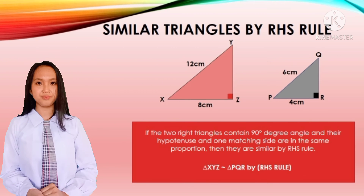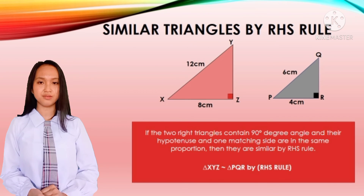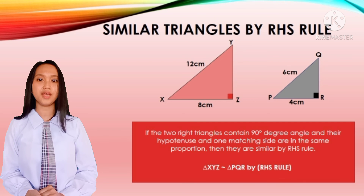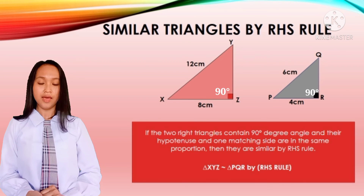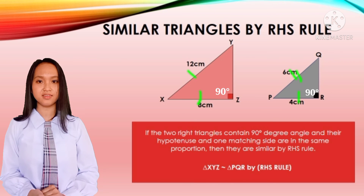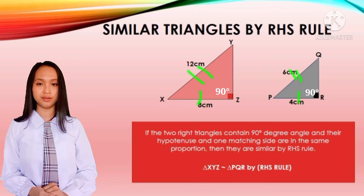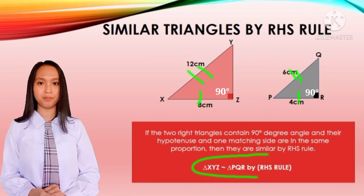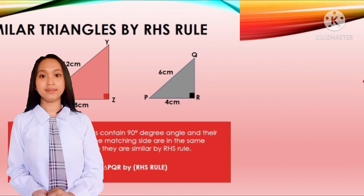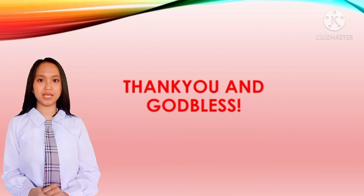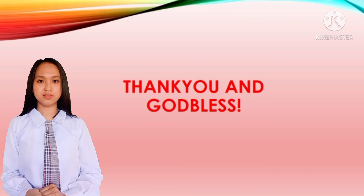Similar triangles by RHS rule: if the two right triangles contain a 90 degree angle and their hypotenuse and one matching side are in the same proportion, therefore these triangles are similar by RHS rule. And that's all the rules on how to determine if two triangles are similar.